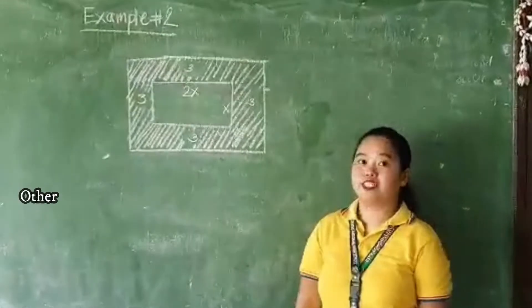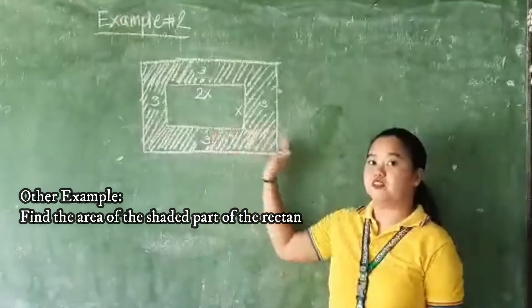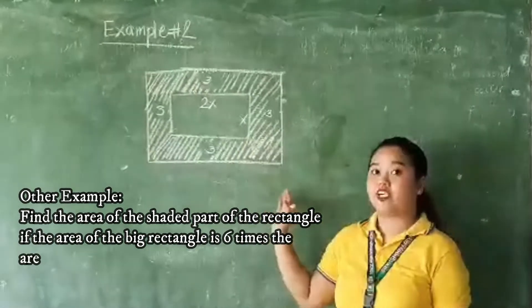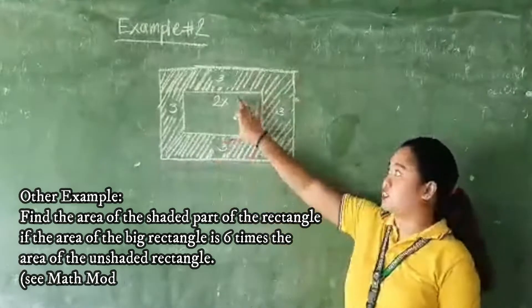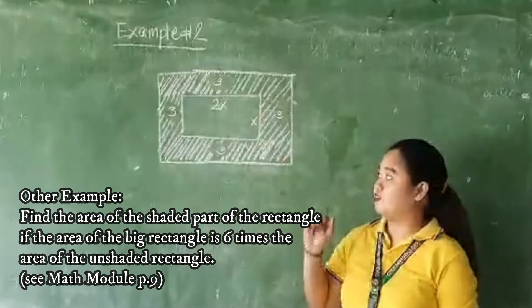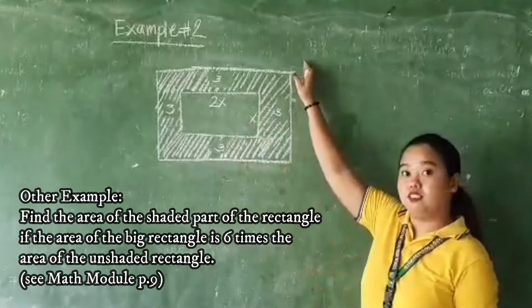In order to solve our example number 2, we need to find the area of the shaded part of this figure. So in finding that, we need to subtract the area of the bigger rectangle from the area of the small rectangle. But before that, we need to find what is the value of the length and what is the value of the width.